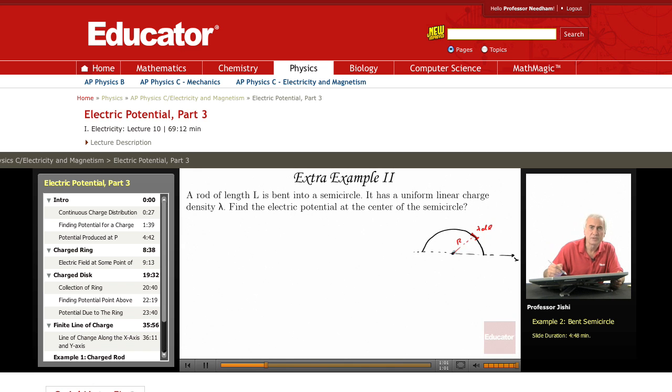So what is the potential produced at this point? ke dq over r, and dq is just lambda DL.